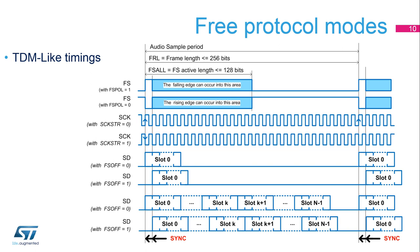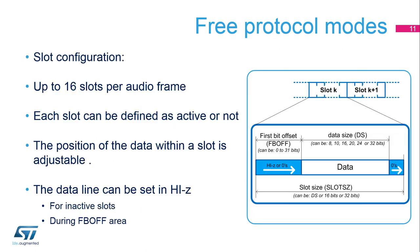The following example shows some of the possibilities of the interface for the TDM-like protocols. In TDM-like protocol, only one edge of the frame synchronization, rising or falling, is used to align the slot's position. The frame length, the duty cycle, and polarity can be adjusted. The clock strobing edge can be selected. The position of the slots with respect to the frame active edge can be selected. The number of slots per frame, up to 16, can be selected. The slot size is always bigger than or equal to the data size. The SAI allows control of the position of the data inside each slot, and setting of the unused slots to HIZ if needed.